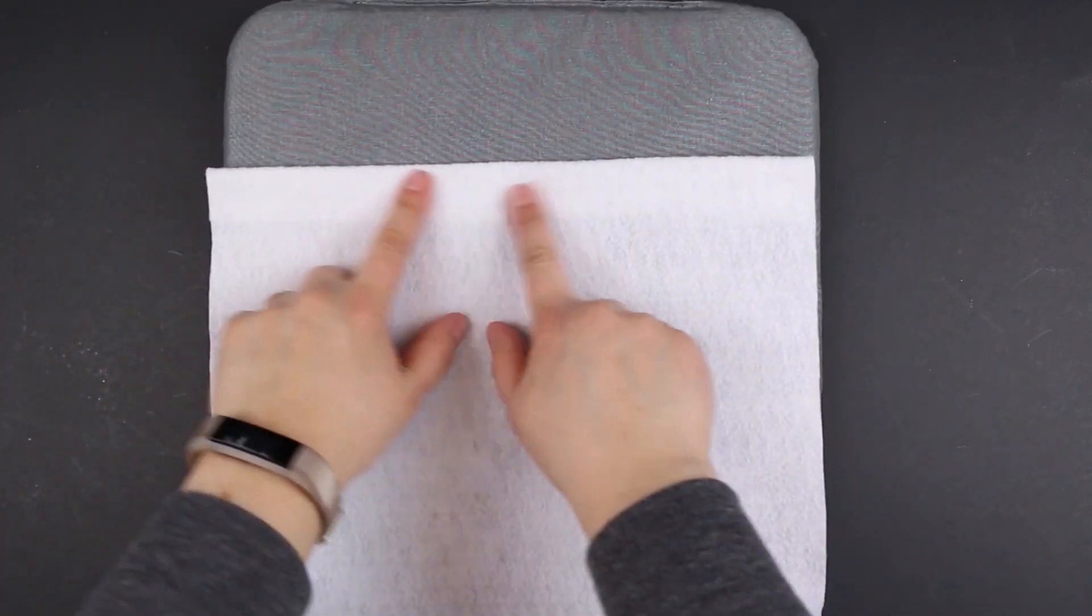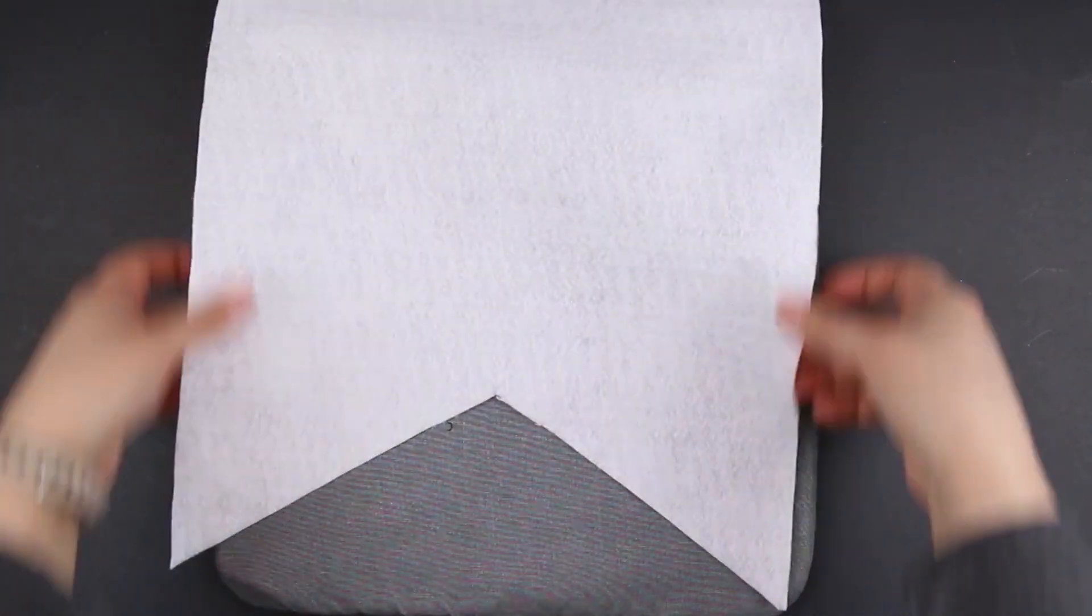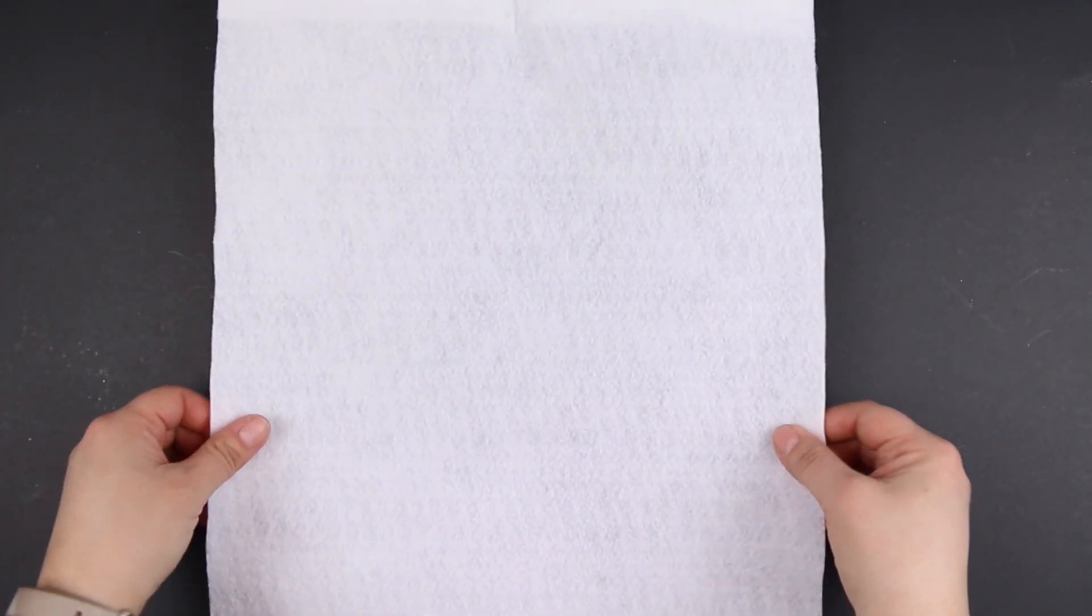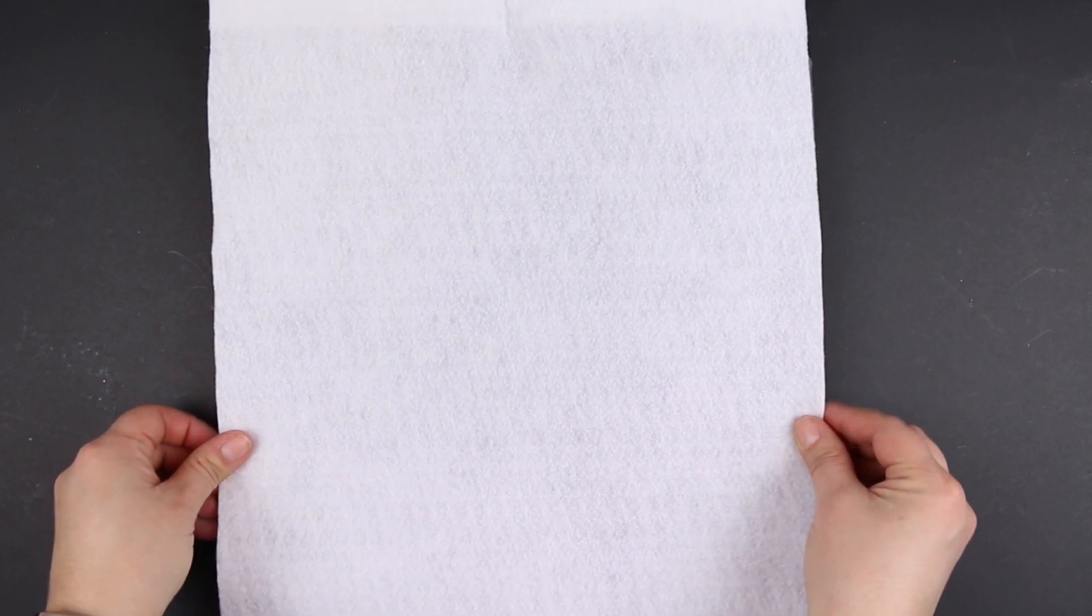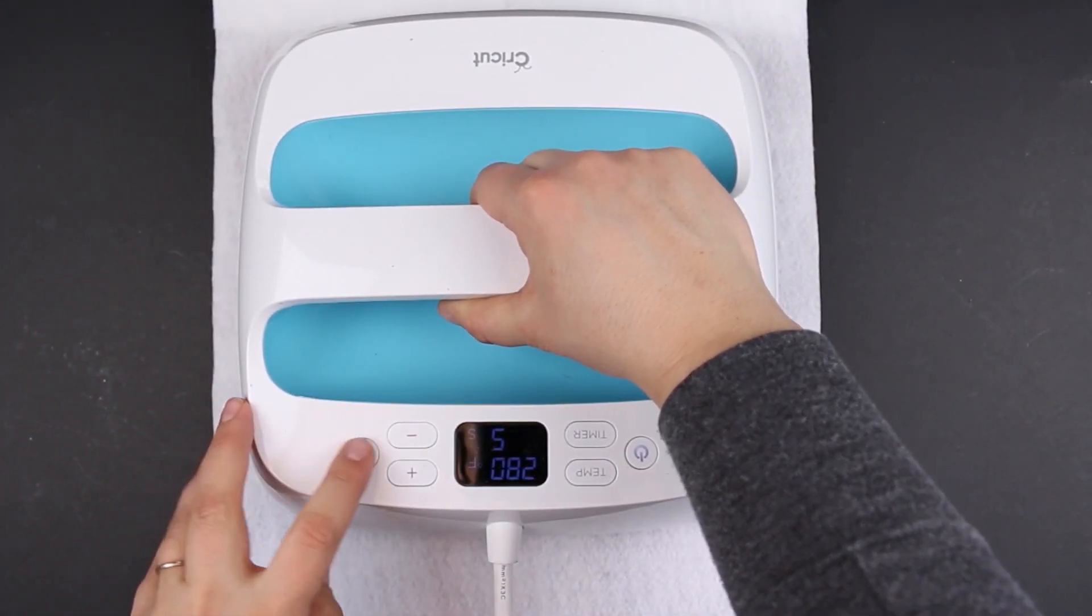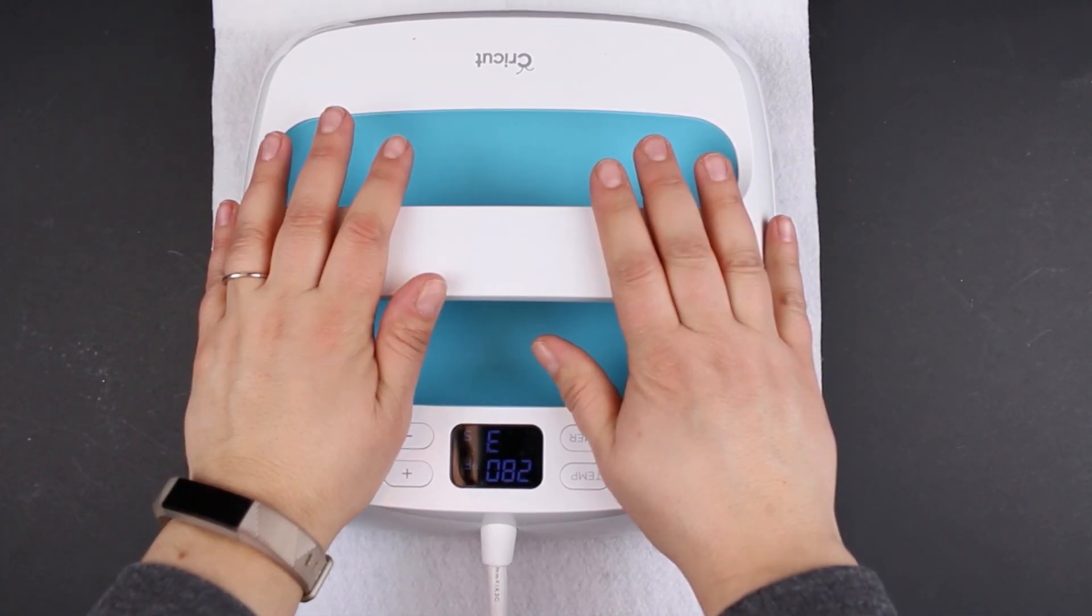I really like using my Cricut EasyPress for iron-on projects because it takes all the guesswork out of ironing on the vinyl, but you can definitely do this with a regular household iron. What I'm doing is I'm centering my banner on my EasyPress mat. You don't want the design to be on the notched part of the bottom and you want to have equal margins around the side.